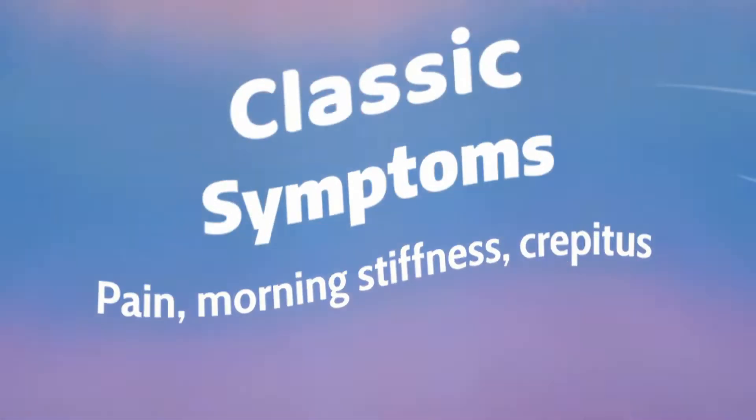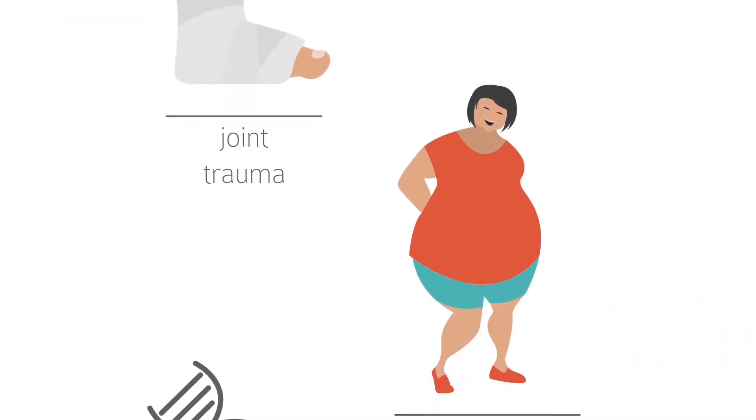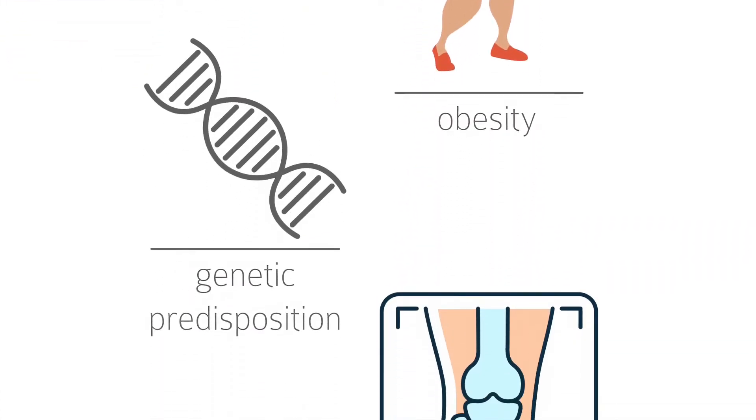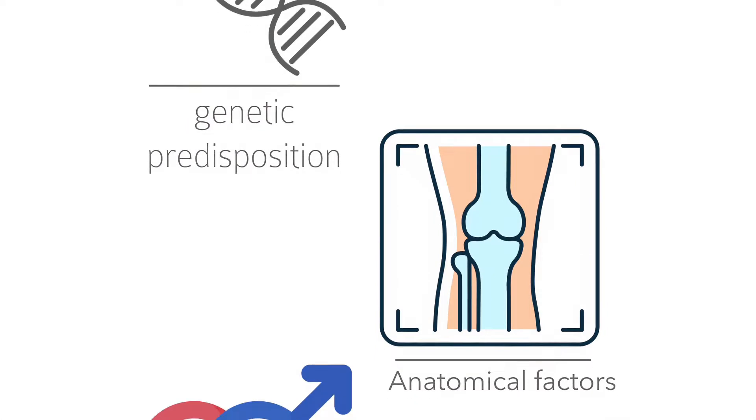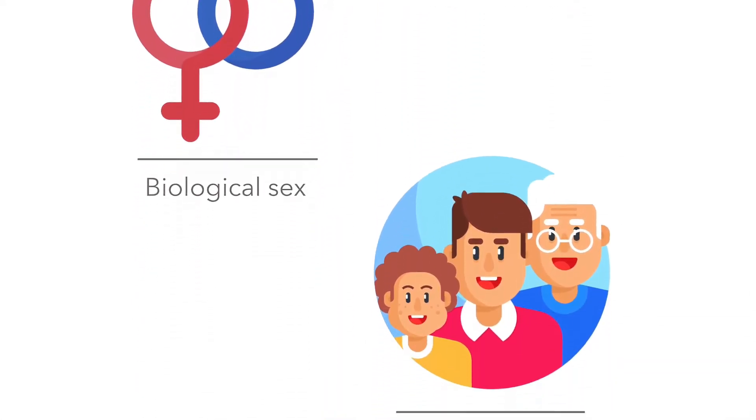A variety of factors play a role in the pathogenesis of OA, including biomechanics, pro-inflammatory mediators, and proteases. The pathway from its initiating factors to the onset of osteoarthritis as a disease is not a linear one. In some ways, osteoarthritis is a spectrum of conditions rather than a single disease.